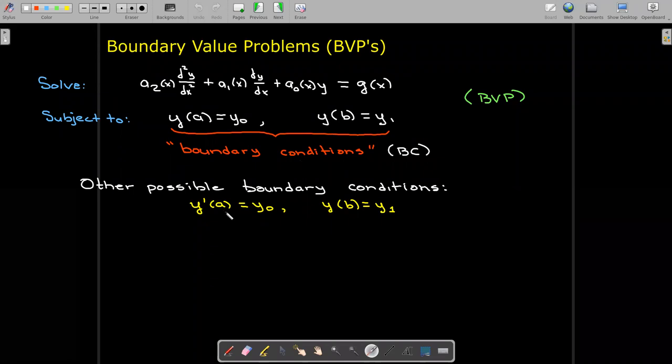So I could have the derivative at one point and the function at another point, or I could just have the function at a, the derivative at b, or I could have the derivative at a and the derivative at b. Those are all possible boundary conditions.